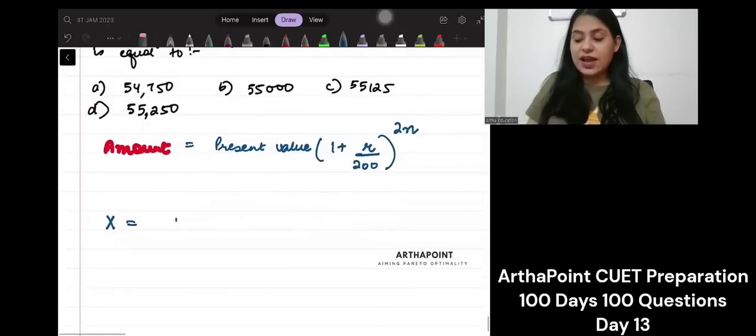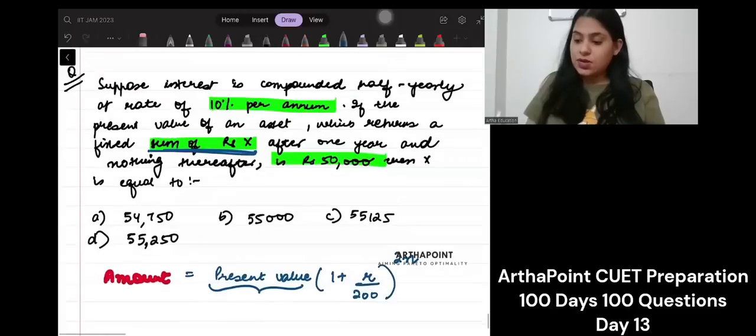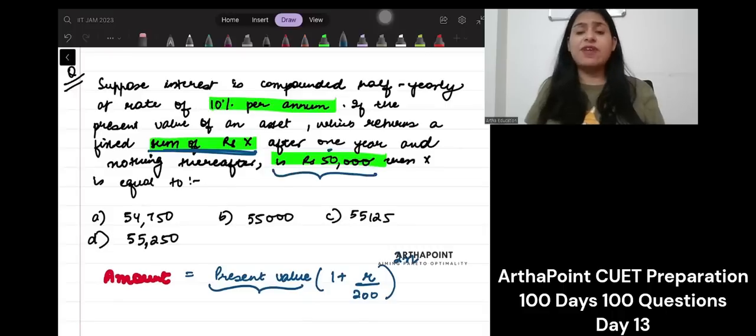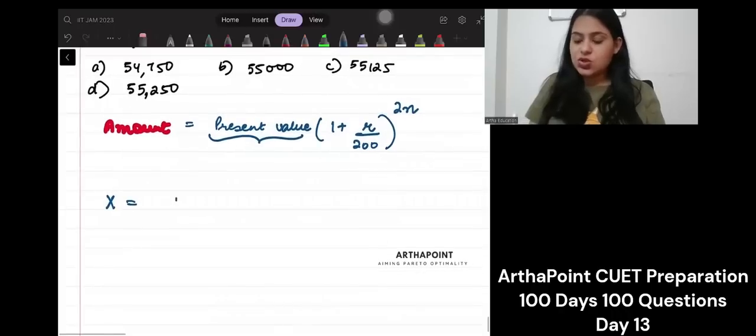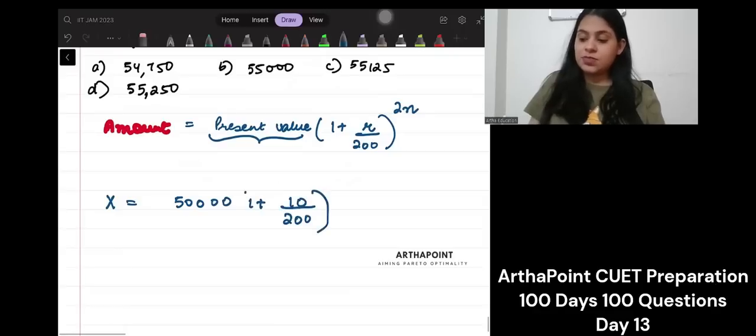So, present value of the asset is what? It says X after one year and nothing thereafter. Its present value is 50,000. So, X is equal to 50,000, 1 plus R is 10 by 200, 2 into N is 1. Is this clear?